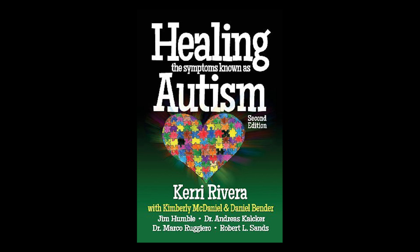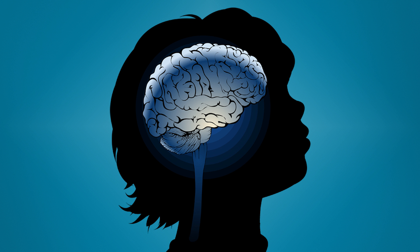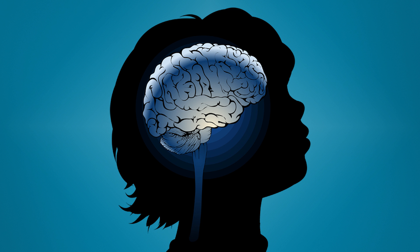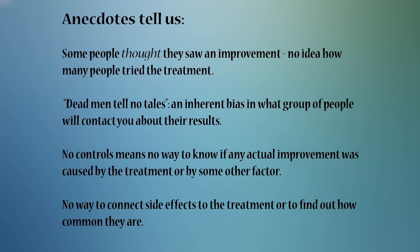Back to the book. Chapter 2 is just anecdotal stories of people attributing any amount of progress to the use of chlorine dioxide, and with no good reason whatsoever. Kids with autism grow and progress — they learn to deal with their difficulties just like any other person. As I mentioned in my previous video, without a proper study, there is no way to know whether chlorine dioxide has anything to do with improvements made.